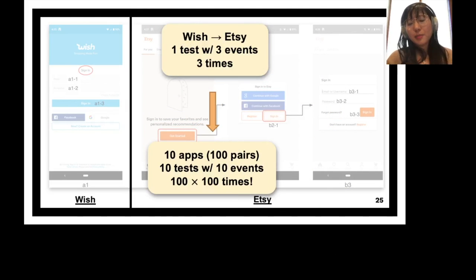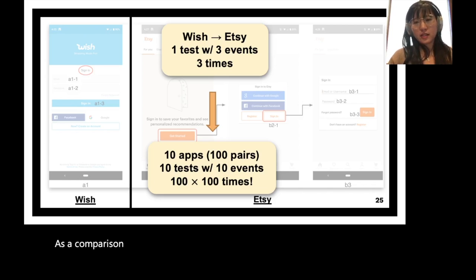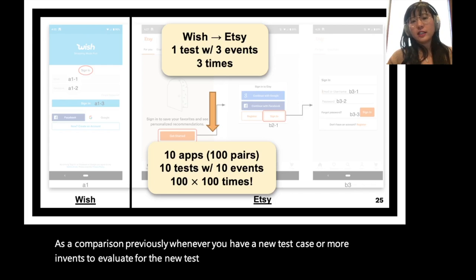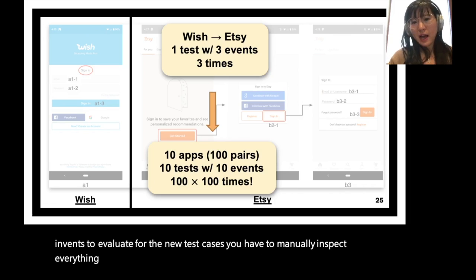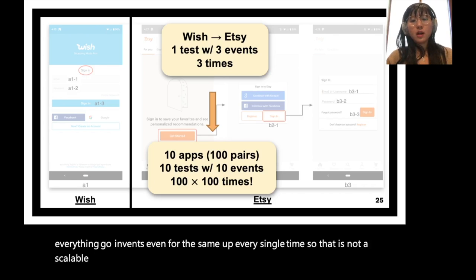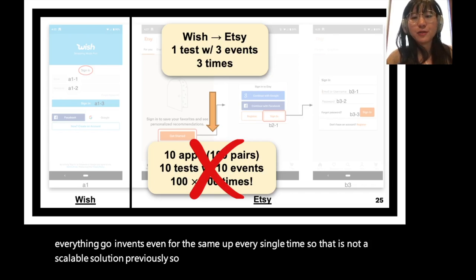As a comparison, previously whenever you had a new test case or more events to evaluate, you had to manually inspect every single event even for the same app, every single time — which is not a scalable solution. Fruiter addresses this by making canonical map construction a one-time effort.